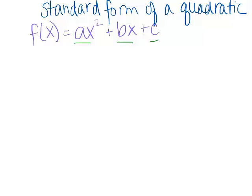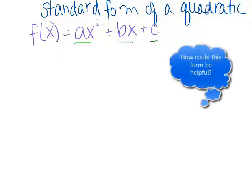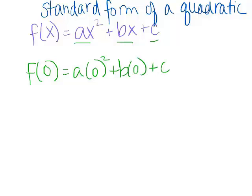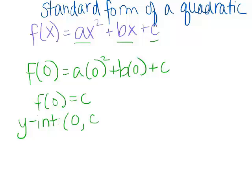Think about why this form might be super helpful. What's your favorite number to plug in? If we're looking in standard form and you try plugging in 0, notice what happens: we get a times 0 squared plus b times 0 plus c, so f of 0 ends up being equal to c. What that means is if you're in standard form, you can clearly see your y-intercept at the point 0 comma c.